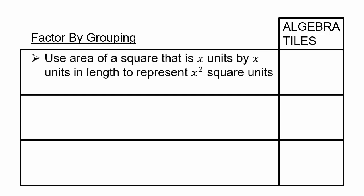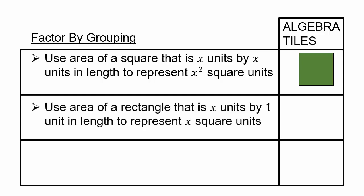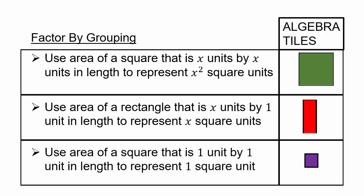We're going to use x by x to represent 1x squared. We're going to assume that x is a positive number large enough so that this green square has area 1x squared units. We will represent 1x as a rectangle which is x units long and 1 unit wide, so its area is x square units. The area of the square above it is x squared square units. We will represent 1 square unit by a 1-by-1 square.